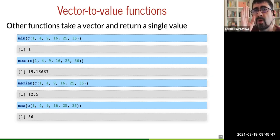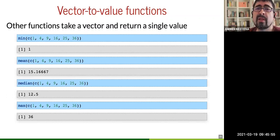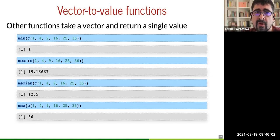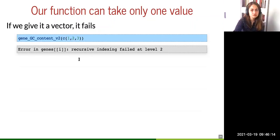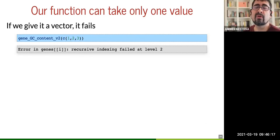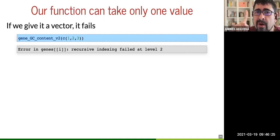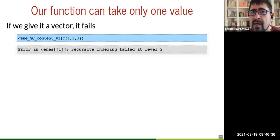We want our function to be like 'many-to-many': give a list of genes and get a list of GC contents. But if we try to give a vector like 1:3 to our function, we get an error because it is designed to take one index. So I prefer to show the big solution — this is the second concept of today's class.